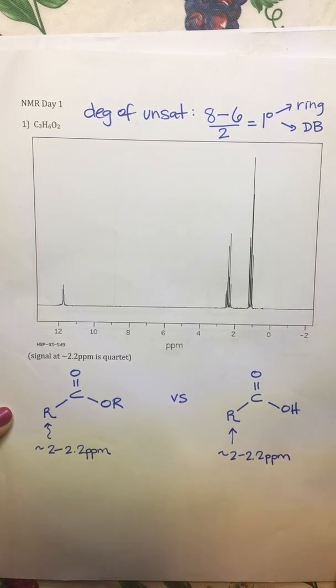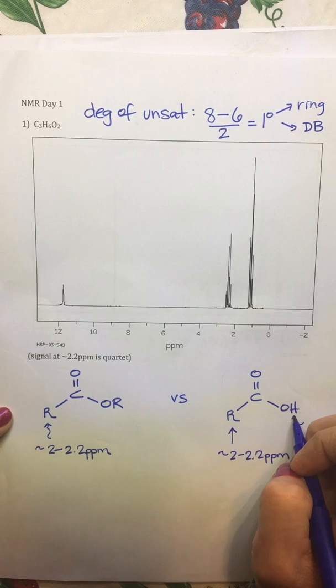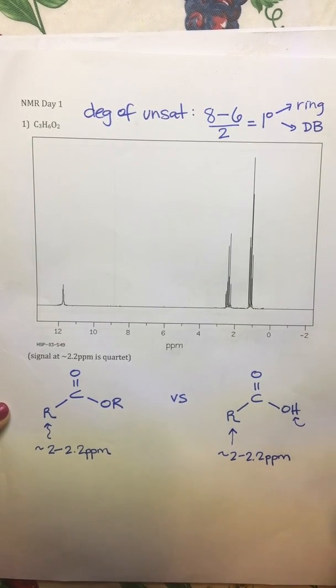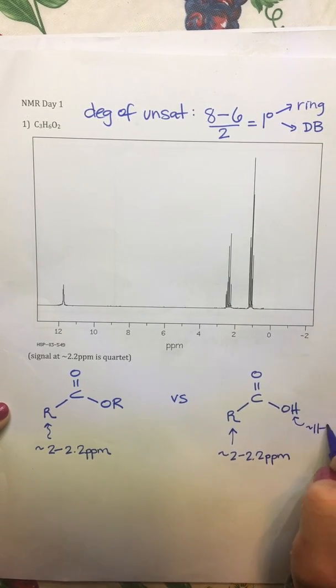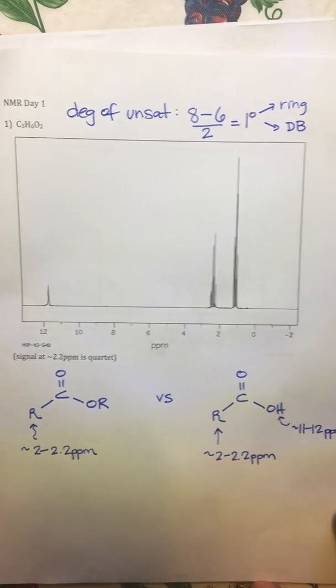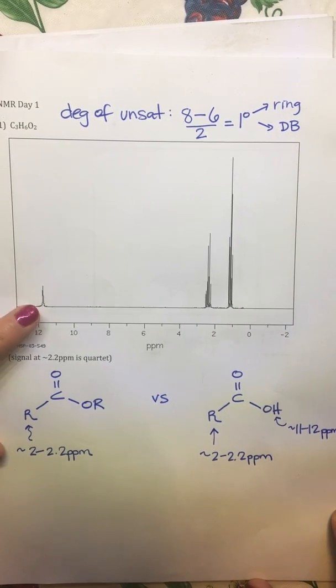But a big difference here is the hydrogen of a carboxylic acid - that signal would be right around 11 to 12 ppms. Which if you are taking a peek at your spectrum, we do have that right away.